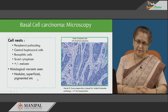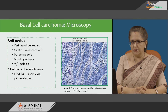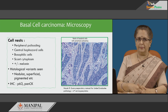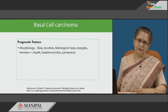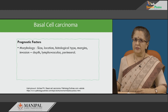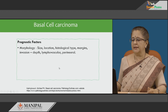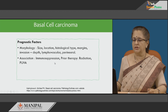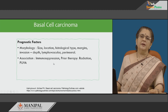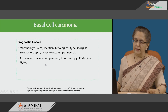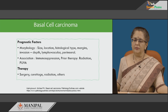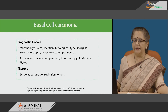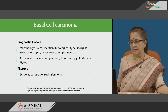Histological variants of basal cell carcinoma include nodular, superficial spreading, and pigmented types. Immunohistochemistry markers include p63 and pancytokeratin. Prognostic factors are similar to squamous cell carcinoma: location, histological type, size, margins, depth of invasion, lymphovascular and perineural invasion, association with immunosuppression, and prior radiation or PUVA therapy. Treatment includes surgery — most commonly Mohs micrographic surgery — along with curettage, radiation, and other therapies currently under clinical trials.